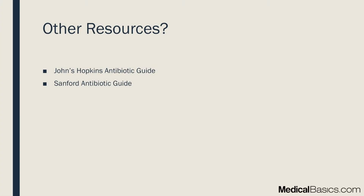Other high yield resources are the Johns Hopkins Antibiotic Guide and the Stanford Antibiotic Guide. These are both paid resources — around $30 per year as a yearly subscription. They're great resources, so definitely highly recommended if you're willing to pay.